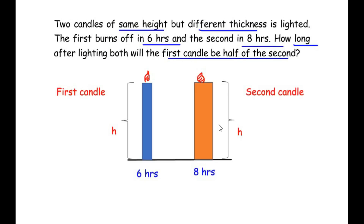Here two candles are shown — the first candle and the second candle — and both have been lighted. The height of both candles is the same, so both are assigned the height h. The first candle is of lesser thickness because it burns off in six hours, and the second one is a bit thicker because it takes longer to burn off.